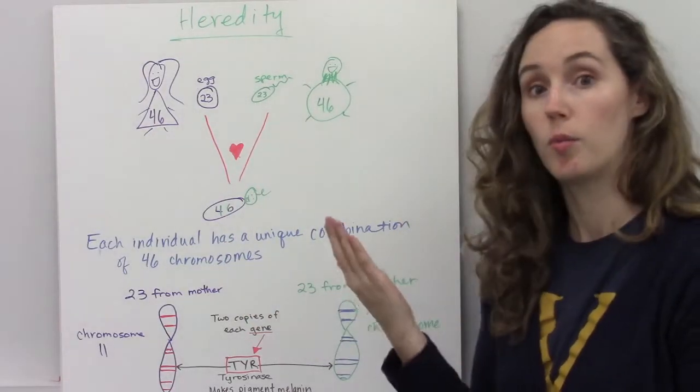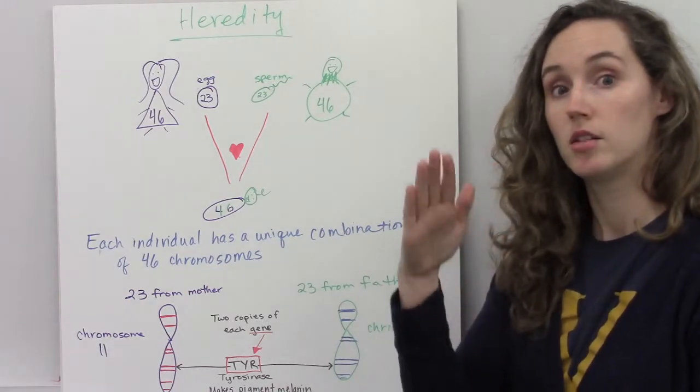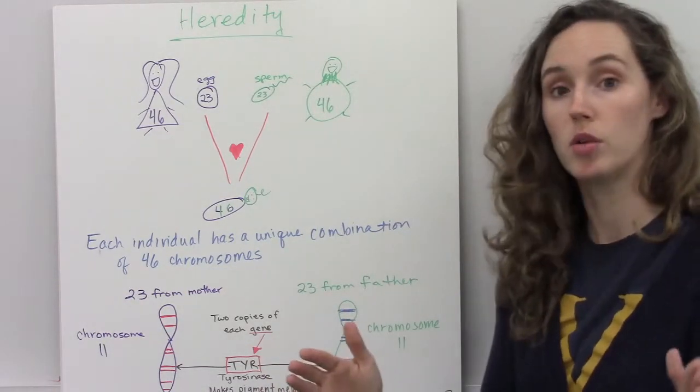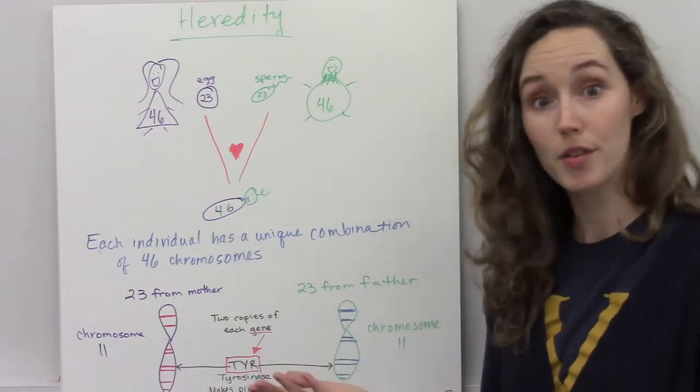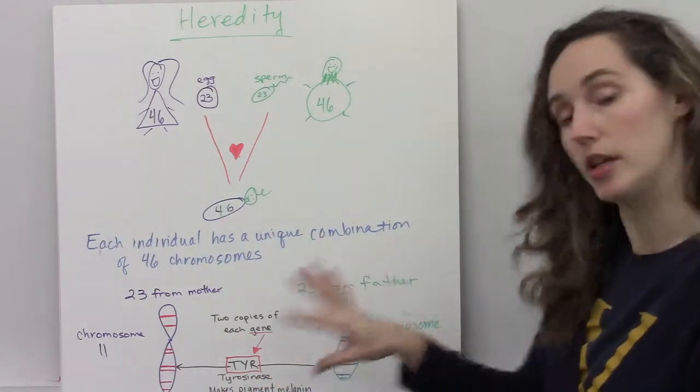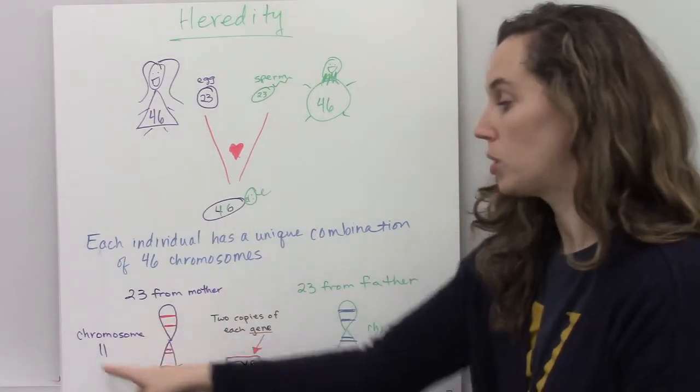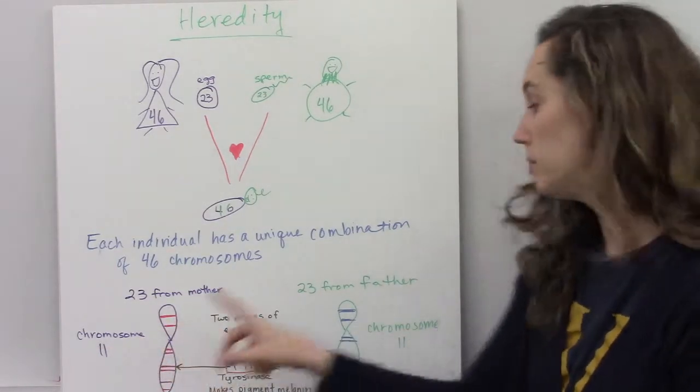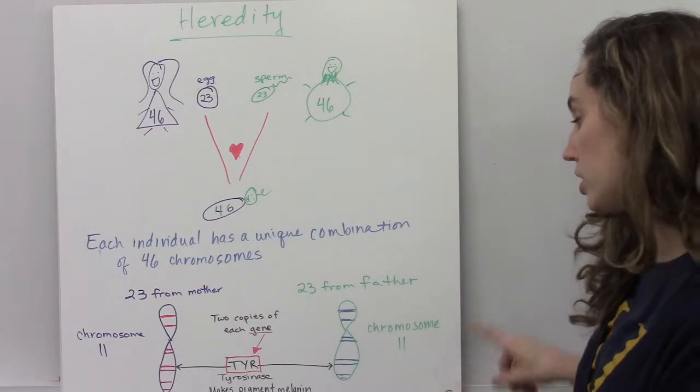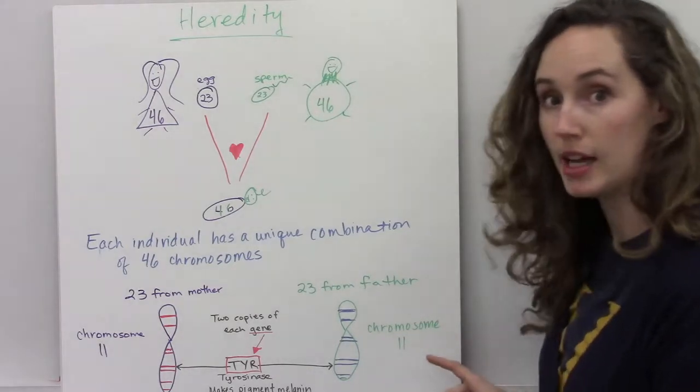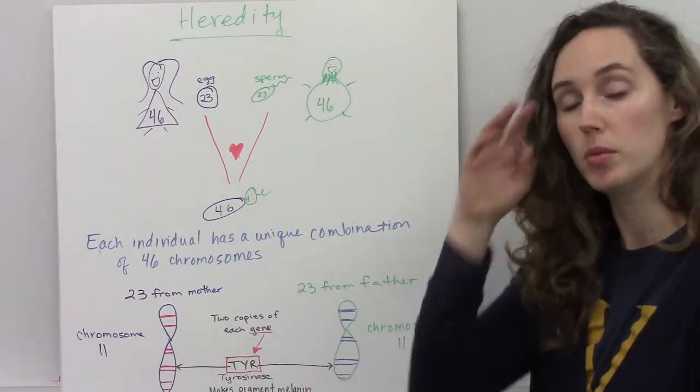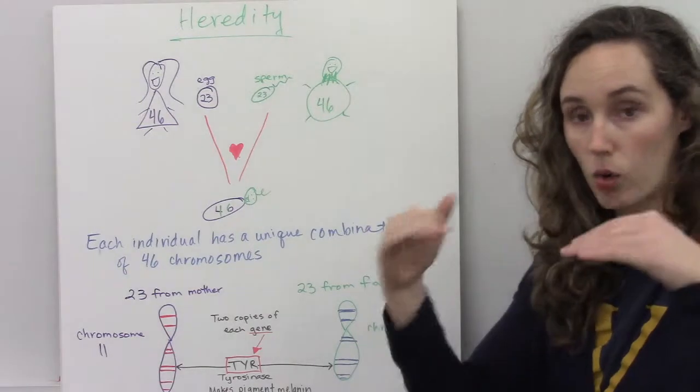Because you get two copies of every chromosome, you also get two copies of every gene. Here's my example. I got one version of chromosome 11 from my mom and one other version of chromosome 11 from my dad.